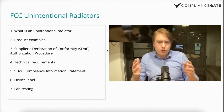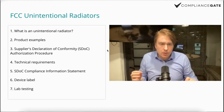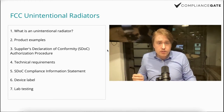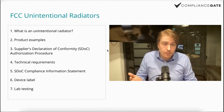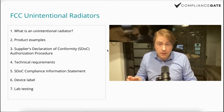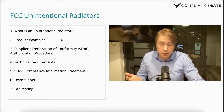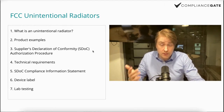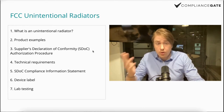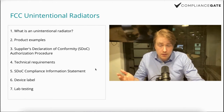In this video I will try to help you make sense of the concept of an unintentional radiator when it comes to FCC regulations — specifically Title 47 — which is something you have to consider if you're importing or manufacturing electronics in the United States. We'll start with the definition, move on to examples, a Supplier's Declaration of Conformity or SDOC authorization procedure, technical requirements, the information statement, and the device label.